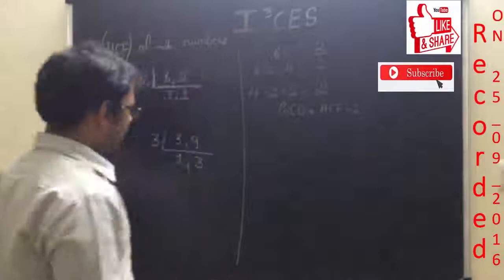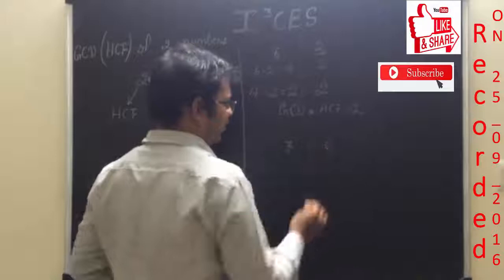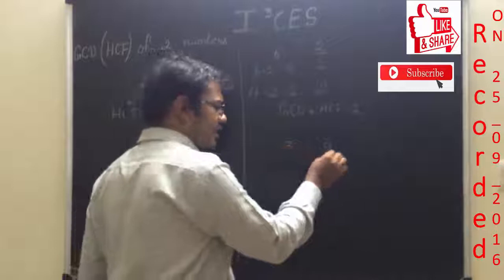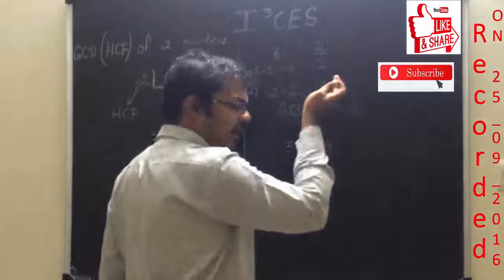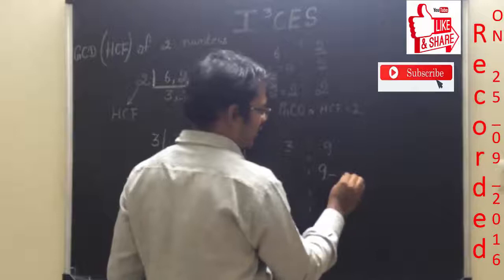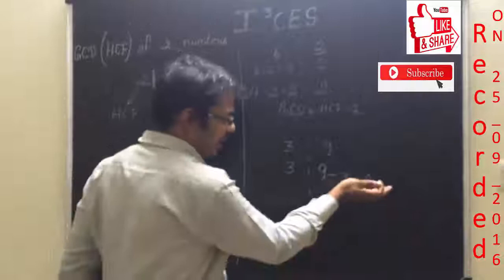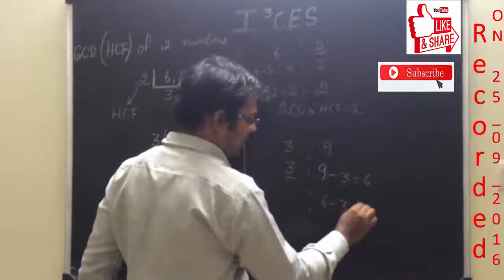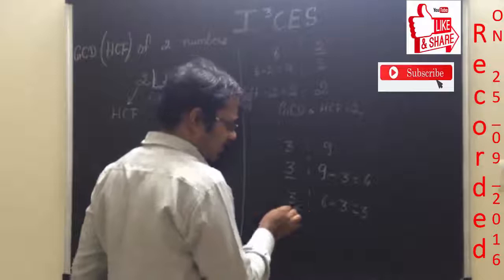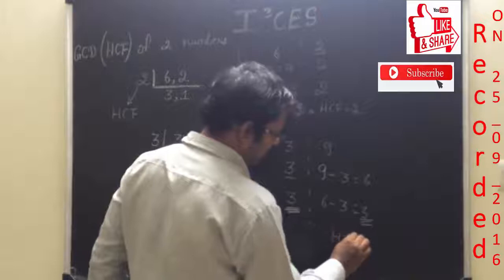In this example, consider 3 and 9. Is 3 equals to 9? No. Is 3 less than 9? Yes. At that time, 9 is larger, so you have to minimize this number by writing 9 minus 3 which equals 6. Retain the other number as it is. Is 3 equals to 6? No. Is 3 less than 6? Yes. At that time, 6 has to be reduced: 6 minus 3 equals 3. Is 3 equals to 3? Yes. At that time, you display the message stating that HCF equals to 3.